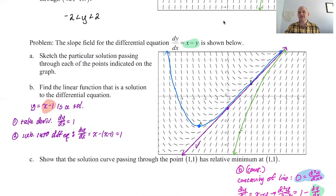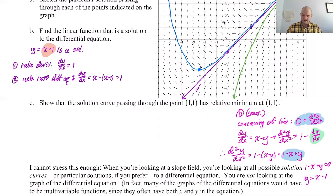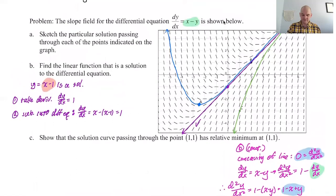In this case, solution curves are always concave up if they are above the line y equals x minus one. There are videos on how to use your Inspire to create slope fields — do it. Create a bunch of slope fields, look at them, find patterns. Play around with differential equations like dy/dx equals x minus y, 3x minus y, 5x minus 2y. Can you find the linear solution? And once you know it, can you determine where curves are concave up or concave down?